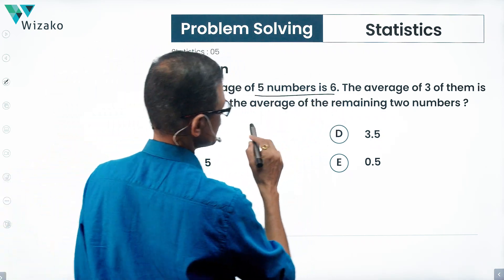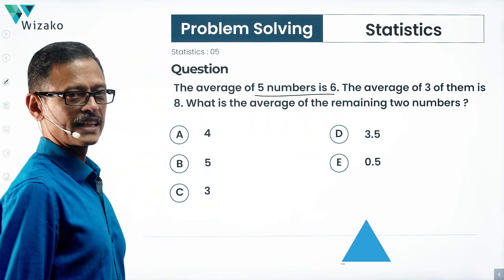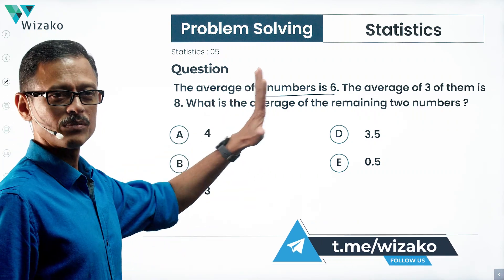The average of 5 numbers is 6. The average of 3 of these numbers is 8. What is the average of the remaining two numbers?